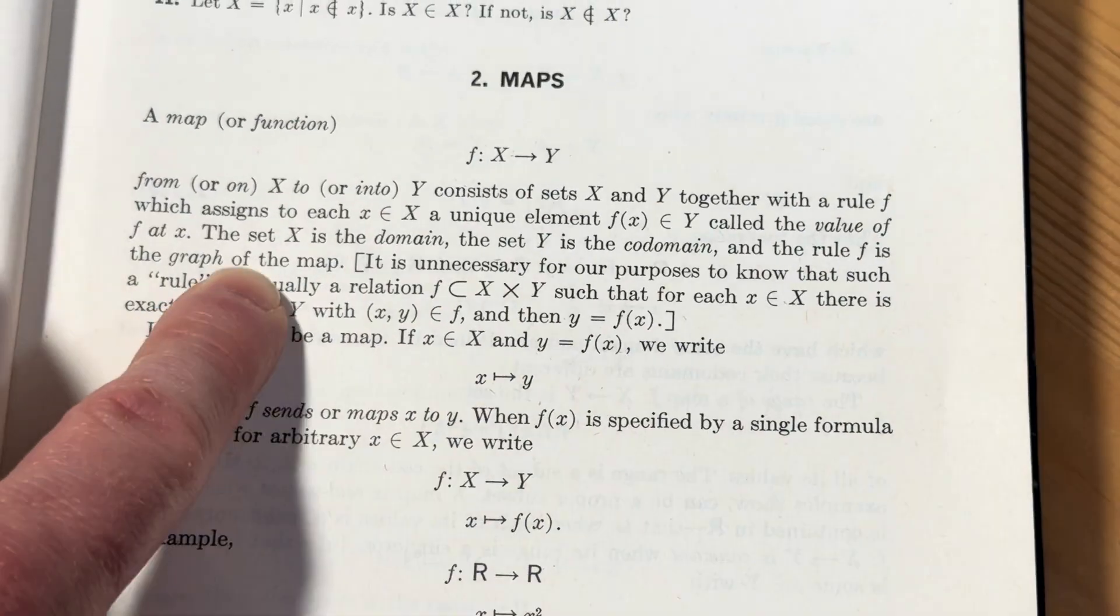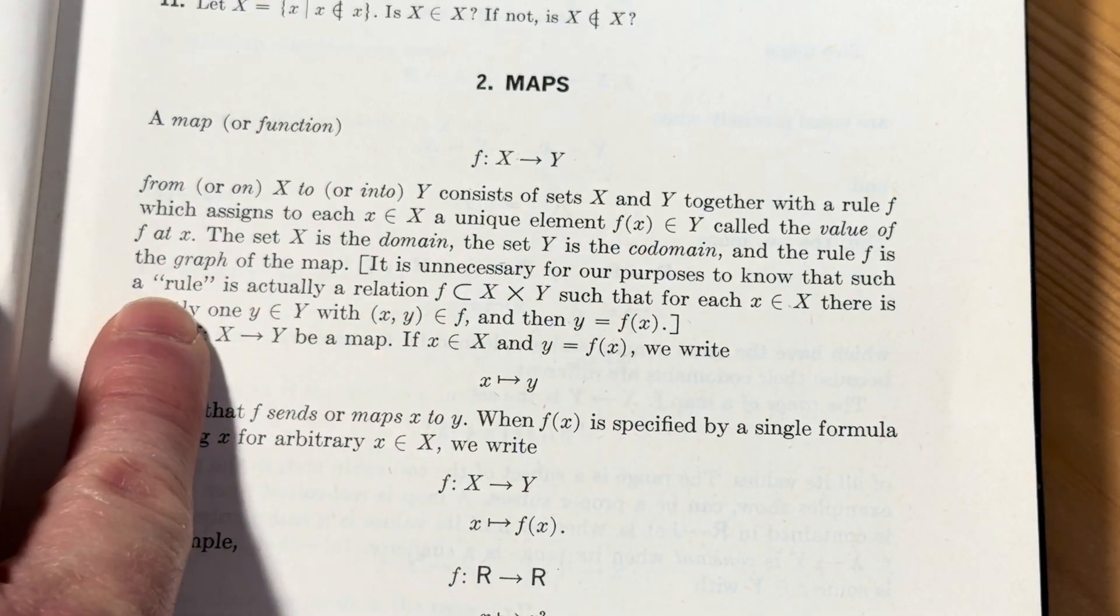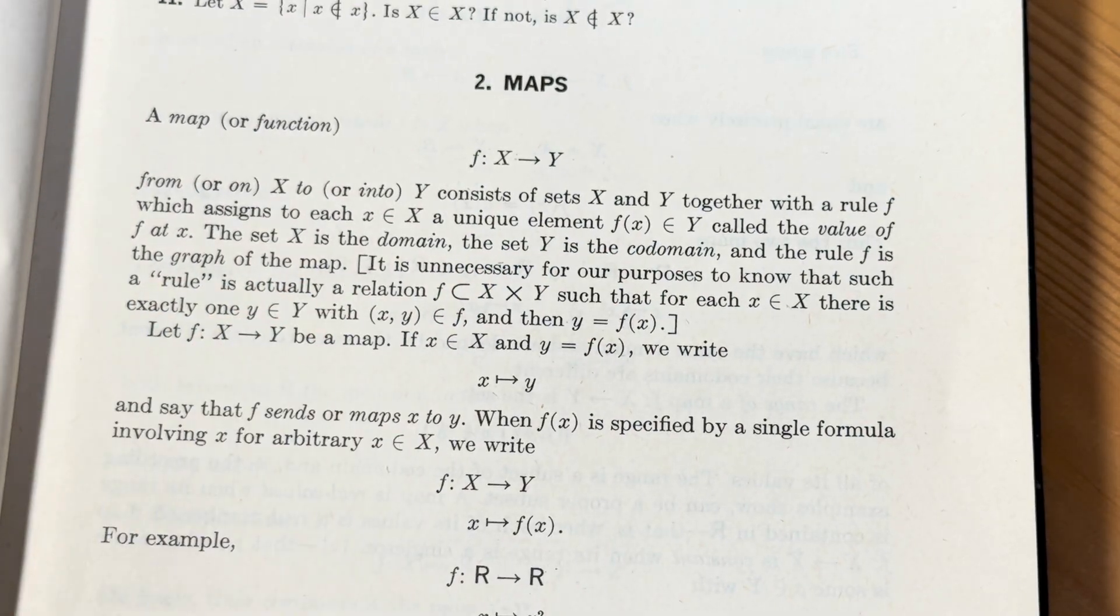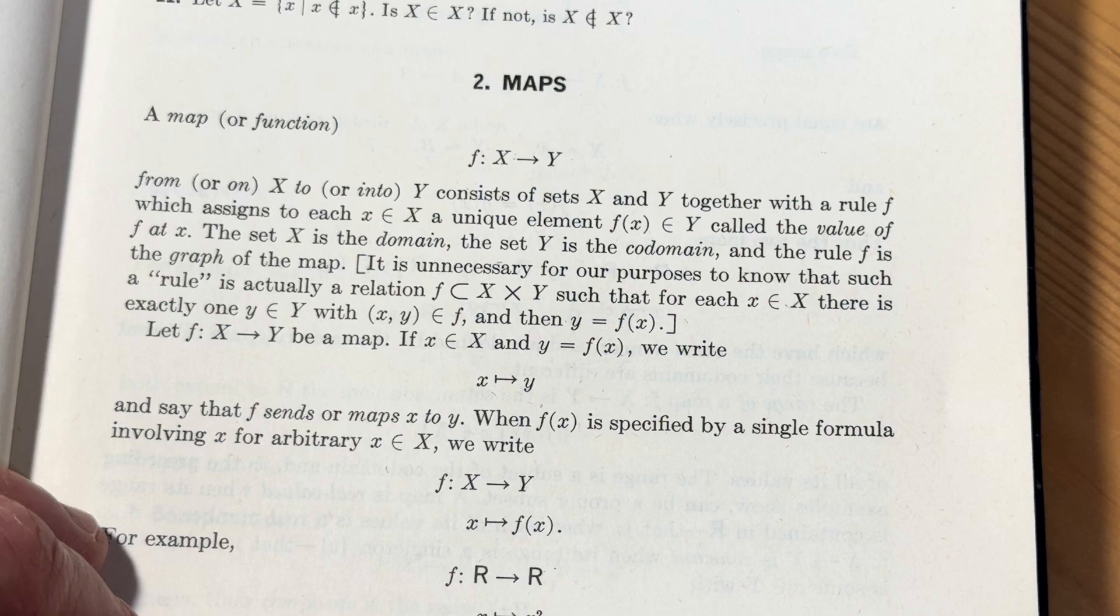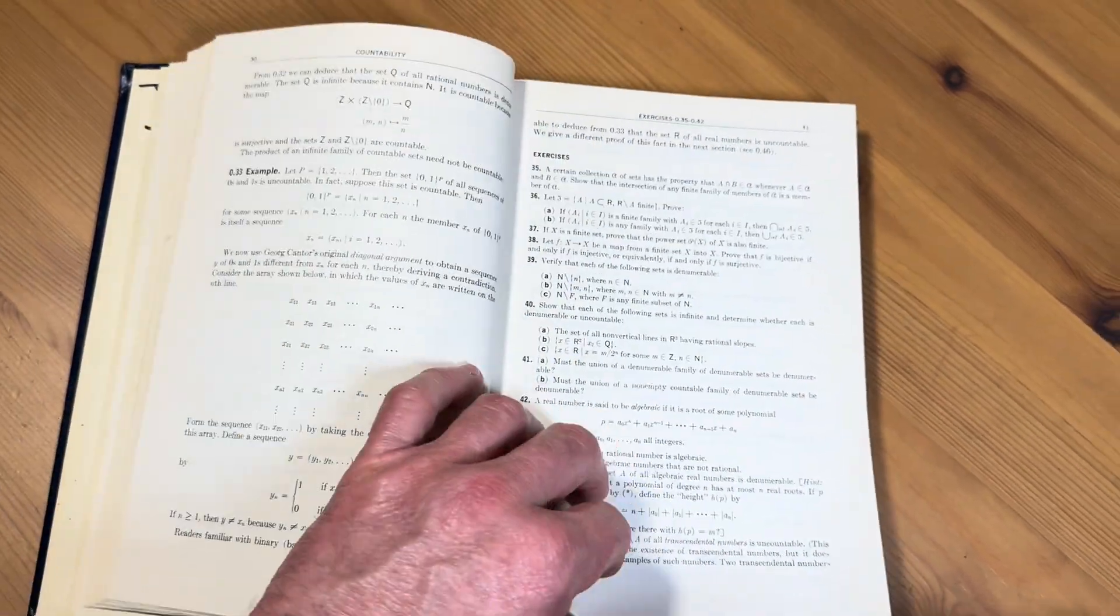Let me zoom out a bit so we can see here better. The set capital x is the domain and the set y is the codomain and the rule f is the graph of the map. Yeah, cool. And so that's not even the topology yet, right? This is just like prereq material until we get to the topology.